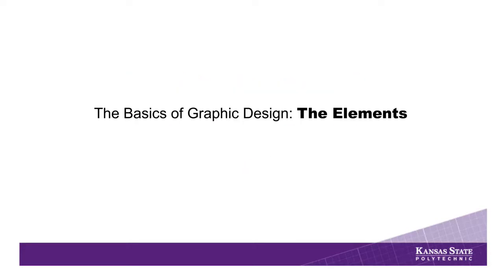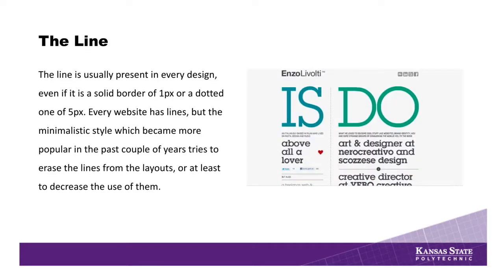The first thing I want to talk about are the elements of graphic design — the basic elements you should consider in any kind of design you're working on. The first one would be line. You can find line in every kind of design out there, whether it's a solid border, a dotted line, or something that divides areas of a design into different sections to make it more readable for the viewer. It kind of varies depending on trends.